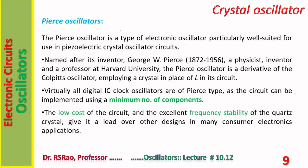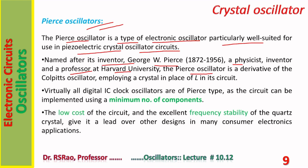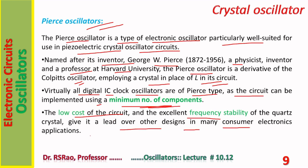Another class of crystal oscillators is the Pierce oscillator. The Pierce oscillator is a type of electronic oscillator particularly well suited for piezoelectric crystal oscillator circuits, named after its inventor George W. Pierce — a physicist, inventor, and professor at Harvard. It is a derivative of the Colpitts oscillator, employing a crystal in place of the inductor L. Virtually all digital IC clock circuits are of a Pierce type, as the circuit can be implemented using a minimum number of components. The low cost and excellent frequency stability of the quartz crystal give it a lead in many consumer electronic applications.